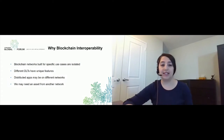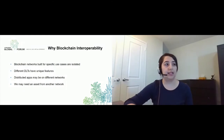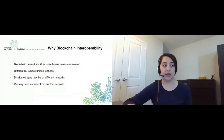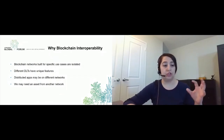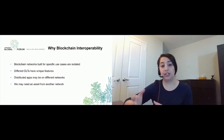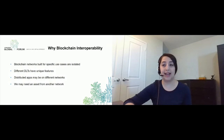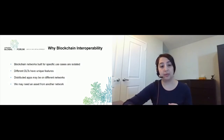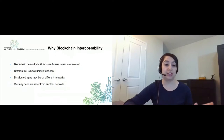Finally, we may need an asset from another network, and this one is separate from the previous ones. For example, let's say I have a decentralized identifier or DID on a Hyperledger Indy network, and I want to use that asset in a Hyperledger Fabric network or any other network. So this is where I have a specific asset, and if we can allow interoperability, I may be able to use that specific asset on different networks.